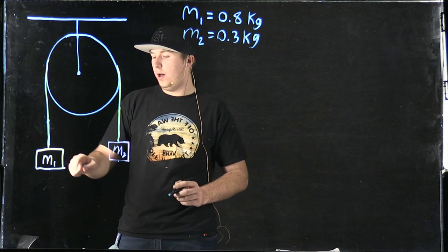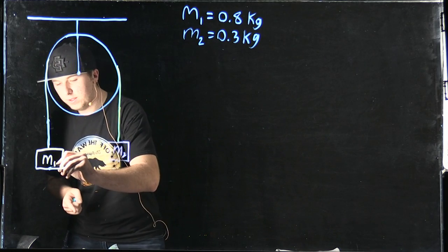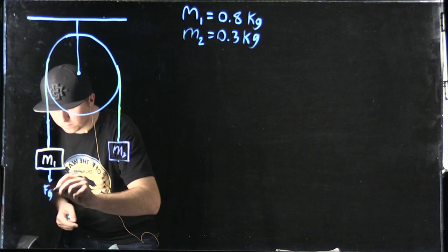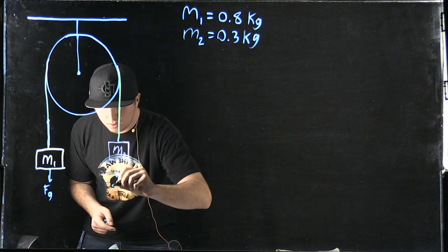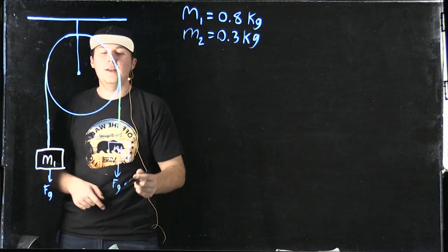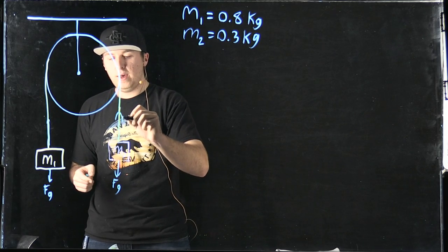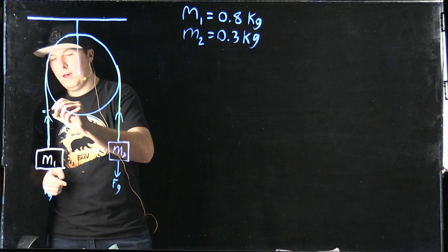So both masses are going to experience a downward force of gravity, and both masses are also going to experience a force pulling up on the string of tension.